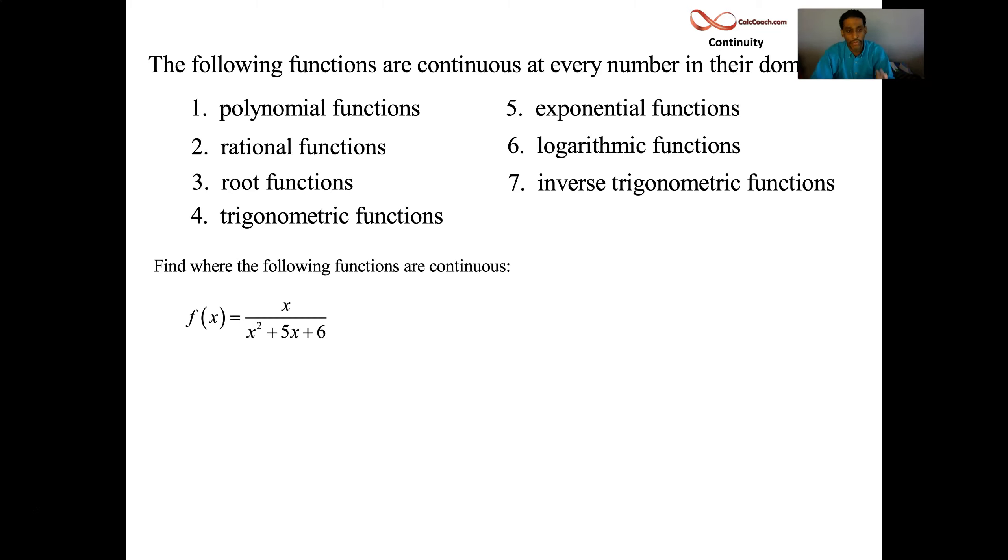So someone gives you a function and asks you, where is this function continuous at? It's a question that you've done before. In disguise, it is a domain question. Where's this function defined at? What kind of things would be bad? Division by zero in this question. We'll factor that. x plus 3, x plus 2 is how it factors. And so then we are not continuous if x is ever allowed to be equal to negative 2. We are not continuous if x is ever allowed to be negative 3, all numbers except those.